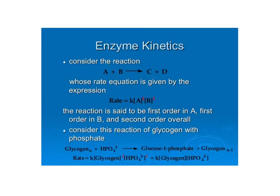The overall reaction order is just the sum of the exponents, and then with respect to each individual substrate they'll say first order, second order, and so on. The reaction shown below is one we'll talk about next semester — this is glycogen phosphorylase, which is used to break down and remove glycogen. The rate here is first order with respect to glycogen, first order with respect to phosphate, but second order overall.